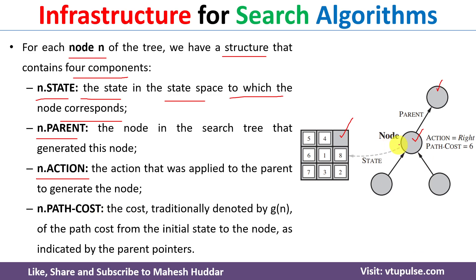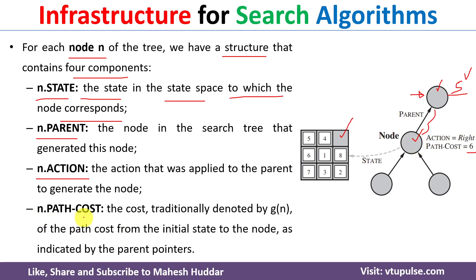n.path_cost is the cost of this particular node starting from the initial state. To generate this node we used this parent, and while generating the parent we must have already calculated its path cost. Let's assume the path cost up to the parent is five. To calculate the path cost of this node, we take the parent's path cost — five — plus the step cost from parent to child, which is one in the eight-puzzle problem. So five plus one equals six.